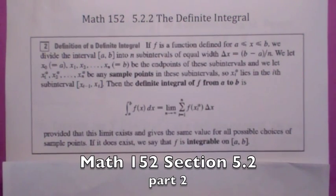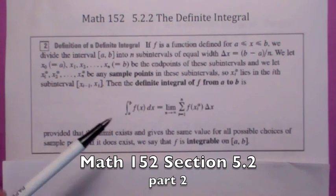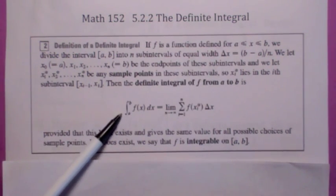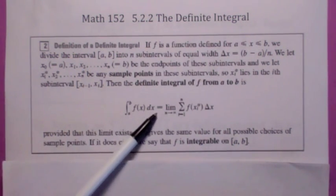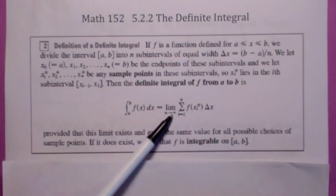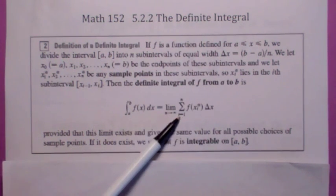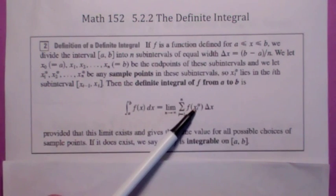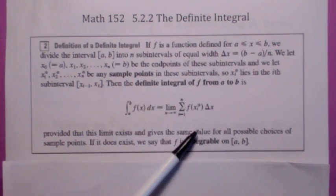Let's continue our discussion on the definite integral. Remember, we defined the definite integral from a to b of f dx to equal the limit as n goes to infinity of this Riemann sum: the sum from i equals 1 to n of f of x sub i star times delta x.